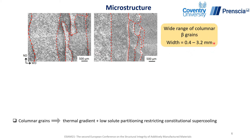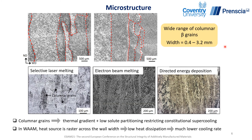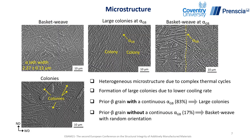Overall, the width of the primary beta grains ranges between 0.4 to 3.2 mm, which shows there is large microstructure heterogeneity. When compared with the literature we can see that WAAM Ti-64 primary beta grain width is much wider. This is mainly due to the heat source rastering across the wall width, resulting in low heat dissipation, much lower cooling rate, and forming much wider primary beta grains.